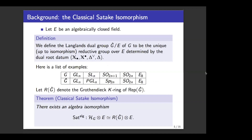We assume E to be an algebraically closed field. Then the Langlands dual group, which we denote by Ĝ over E, is the unique reductive group whose root data equals the dual root data of G. For example, if G equals GL_n, then its dual group is again GL_n. If G equals SL_n, then its dual is PGL_n. If G equals the special orthogonal group SO_{2n+1}, then we get its dual to be the symplectic group Sp_{2n}. And if G is SO_{2n} or E_8, then its dual is just itself. We write R(Ĝ) to be the Grothendieck ring of the category of finite dimensional representations of the Langlands dual group Ĝ. Then the classical Satake isomorphism states that there is an isomorphism between the spherical Hecke algebra and the Grothendieck ring of Ĝ.